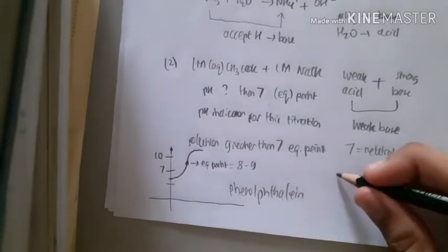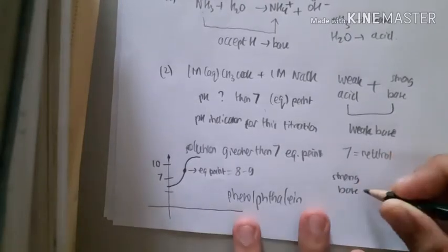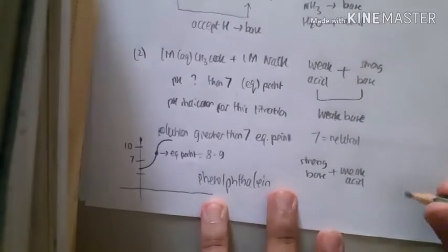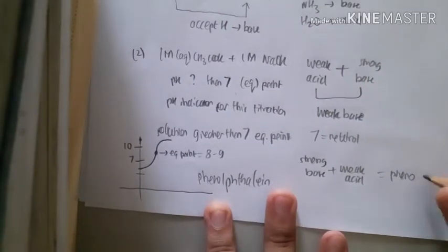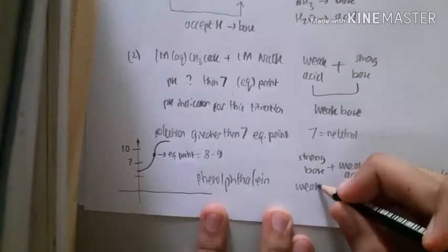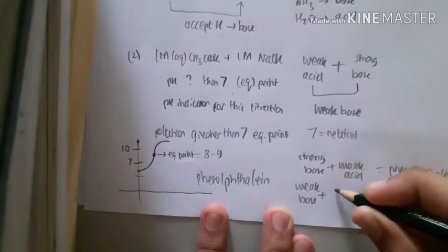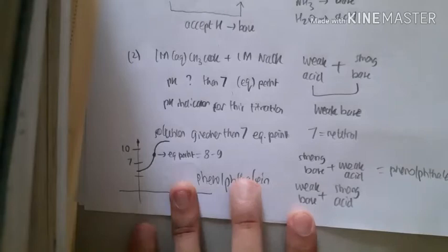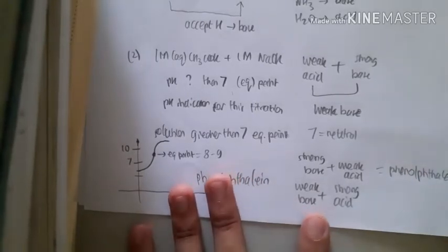Now, if you have strong base and weak acid, it's just the reverse of it. You still have phenolphthalein as the appropriate pH indicator. If you have weak base now, instead of weak acid, and you mix with strong acid,